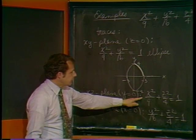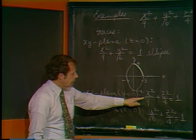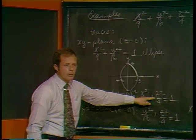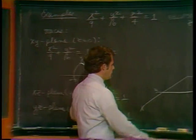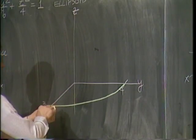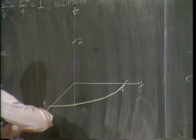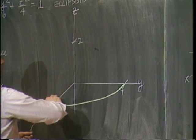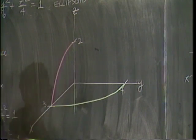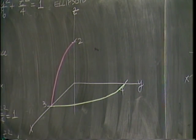So out here at x equals 3, we'll curve around to y equals 4. And there will be a quarter of that ellipse in that position.